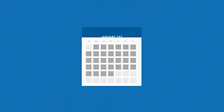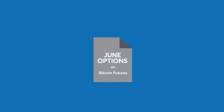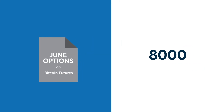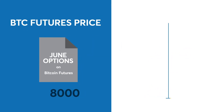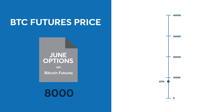Let's look at an example. Assume today is January 1st and we are following a June options contract. The June Bitcoin futures are trading at 8,000. Options on Bitcoin futures have strike price intervals of 10,000 points up to 600% of the previous day's underlying futures settlement price, rounded down to the nearest 10,000. And 1,000 points up to 400% of that same underlying, rounded down to the nearest 1,000.